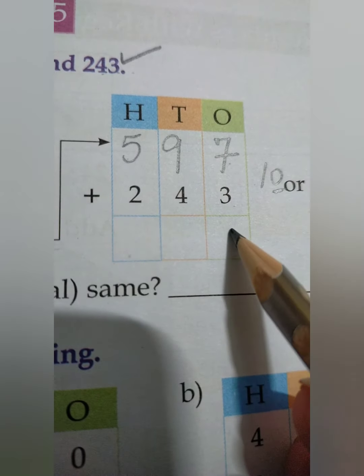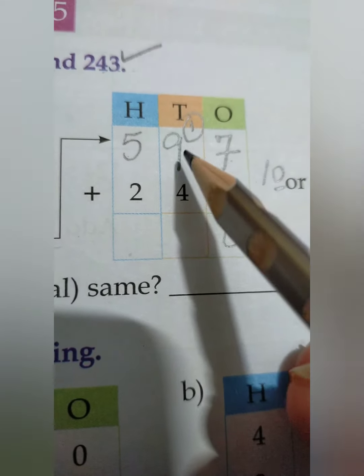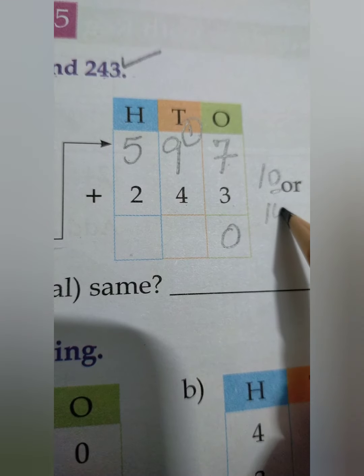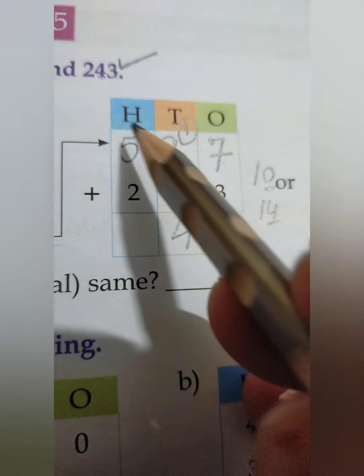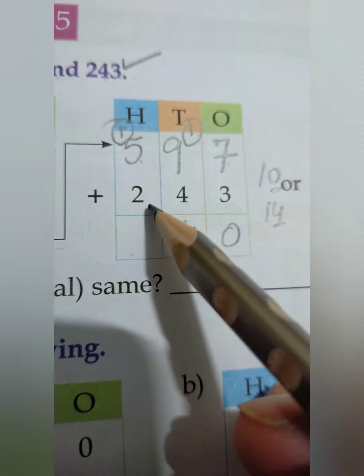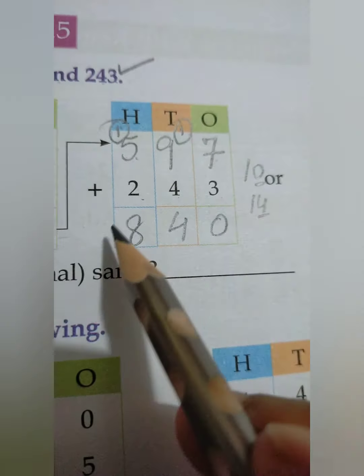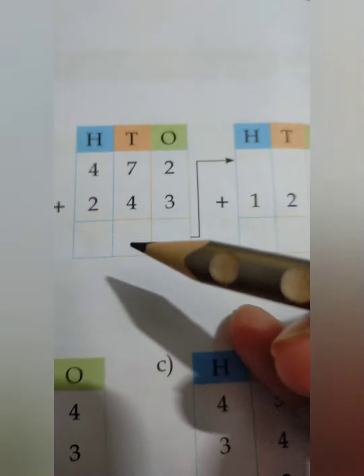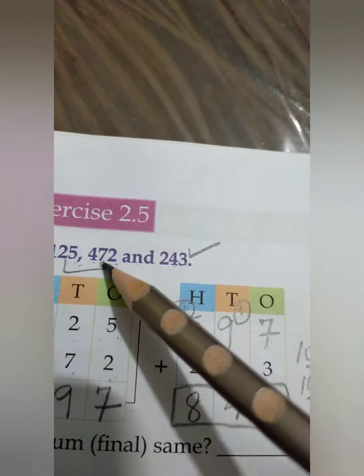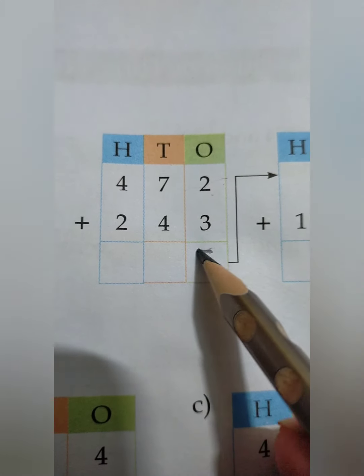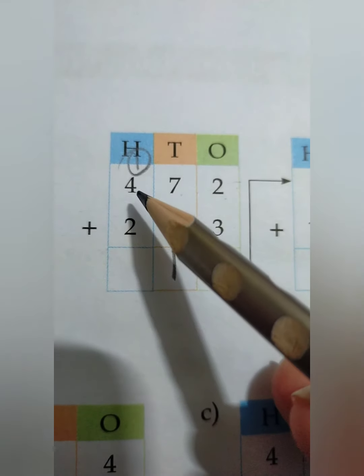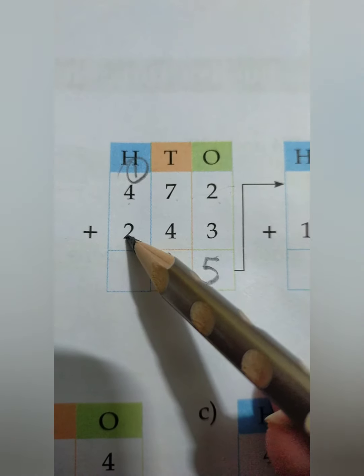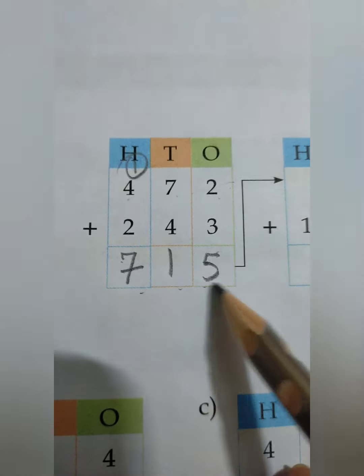We have to add 243 to 597. 7 plus 3 is 10 — write 0, carry 1. 9 plus 1 is 10, and 10 plus 4 is 14 — write 4, carry 1. 1 plus 5 is 6, and 6 plus 2 is 8. We get 840. Now we add in a different order: 472 and 243. 2 plus 3 is 5, 7 plus 4 is 11 — write 1, carry 1.